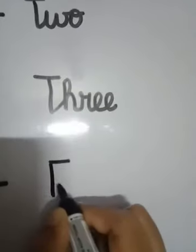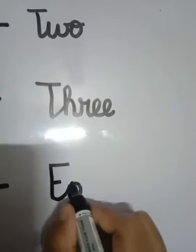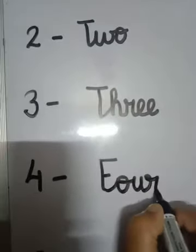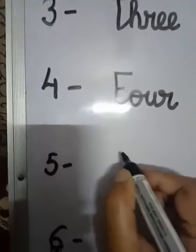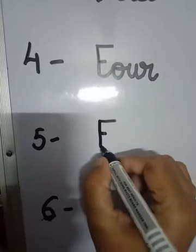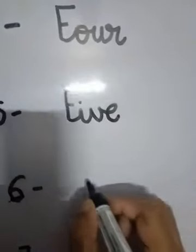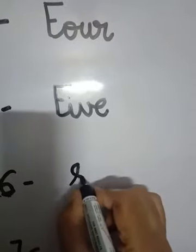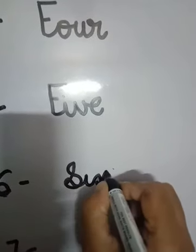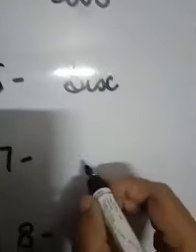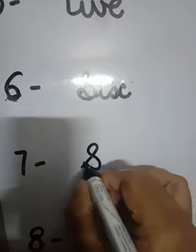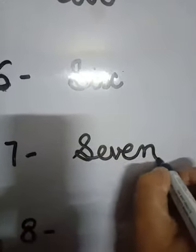Four: F-O-U-R-4. Five: F-I-V-E-5. Six: S-I-X-6. Seven: S-E-V-E-N-7.